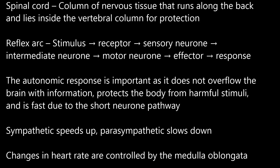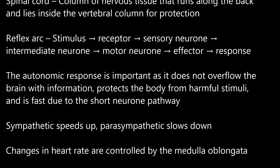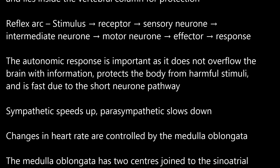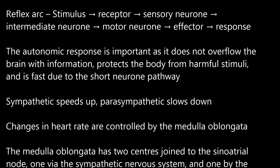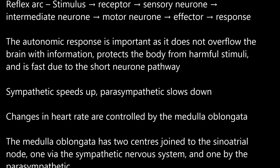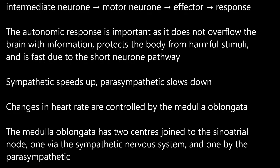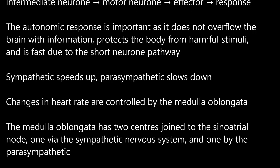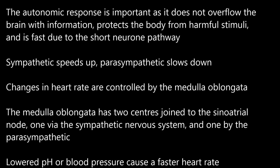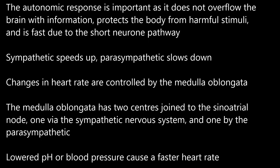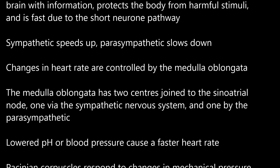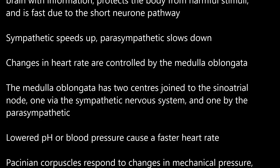Sympathetic speeds up; parasympathetic slows down. Changes in heart rate are controlled by the medulla oblongata. The medulla oblongata has two centers joined to the sino-atrial node: one via the sympathetic nervous system, and one by the parasympathetic. Lowered pH or blood pressure cause a faster heart rate.